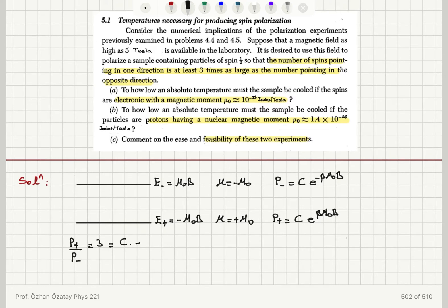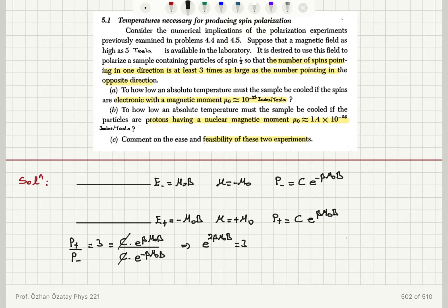This ratio is C times e to the beta mu zero B divided by C times e to the minus beta mu zero B. The constants cancel, so we find that e to the 2 beta mu zero B should be equal to 3. In other words, beta must be equal to the natural logarithm of 3 divided by 2 mu zero B. And beta, remember, is equal to 1 over kT.